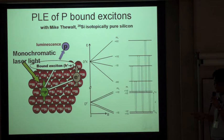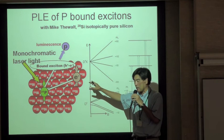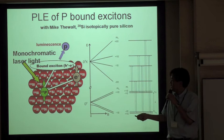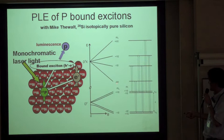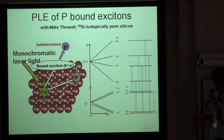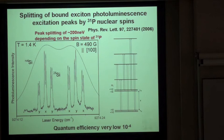The number of transitions we expect for this system is 12. This is because the ground state — after the exciton collapses and we are left with phosphorus and one bound electron — gives a simple four-level Zeeman system. The excited state, determined by the hole character, has levels from −3/2 to +3/2, giving four energy levels. After applying selection rules, we get 12 transitions between excited and ground states.